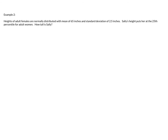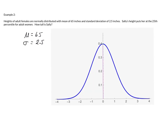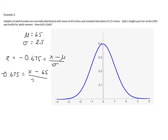Sticking with the same basic setup — heights of adult females normally distributed with mean of 65 and standard deviation of 2.5 inches — this time we're told that Sally's height puts her in the 25th percentile for adult women. How tall is she? The z-score corresponding to Q1, the first quartile or 25th percentile, is negative 0.675. Using the z-score formula x minus mu over sigma, we get negative 0.675 equals x minus 65 over 2.5.